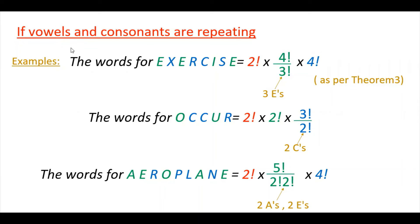Now consider cases where letters repeat. For example, the word EXERCISE: the vowels are E, E, I, E — four total — and the consonants are four as well. The required number of words is 2! × (4! ÷ 3!) × 4!, because the letter E repeats three times among the vowels, so you divide by 3 factorial. You can refer to theorem 3 in permutations to understand why we divide when letters repeat.